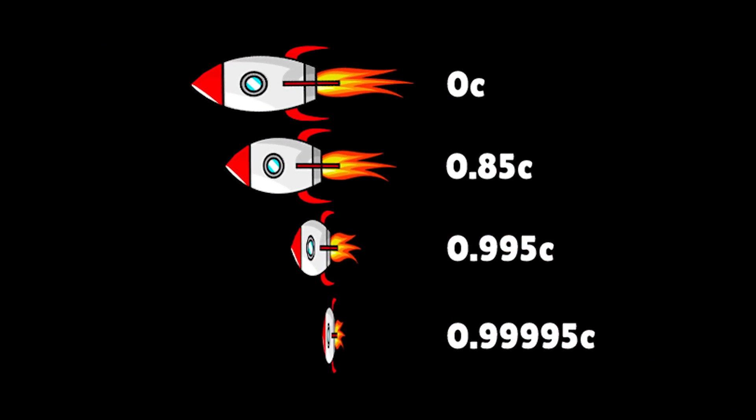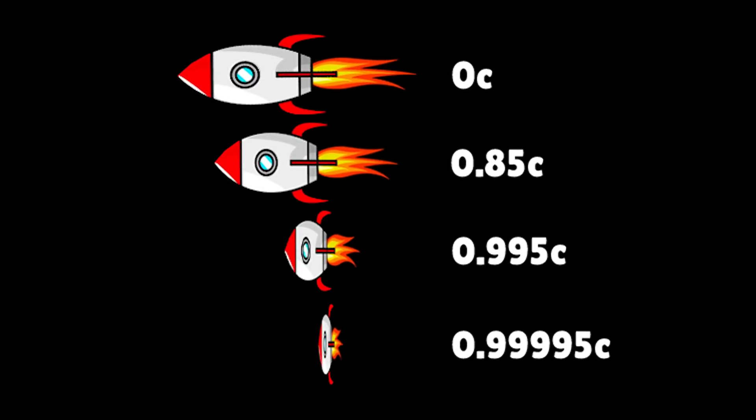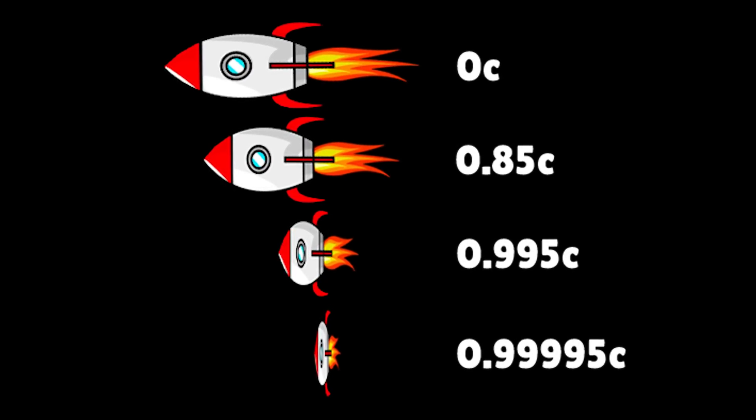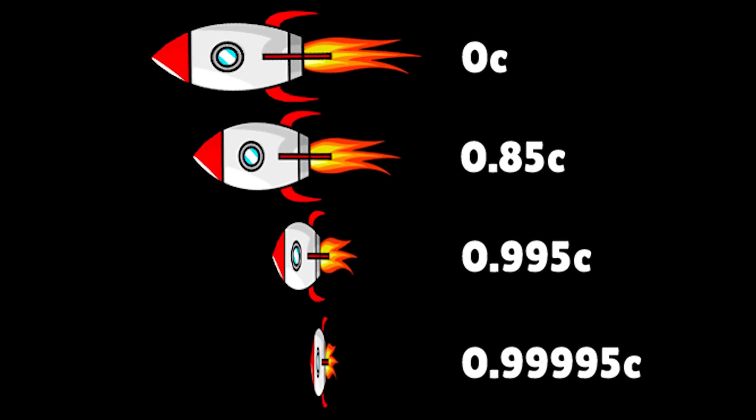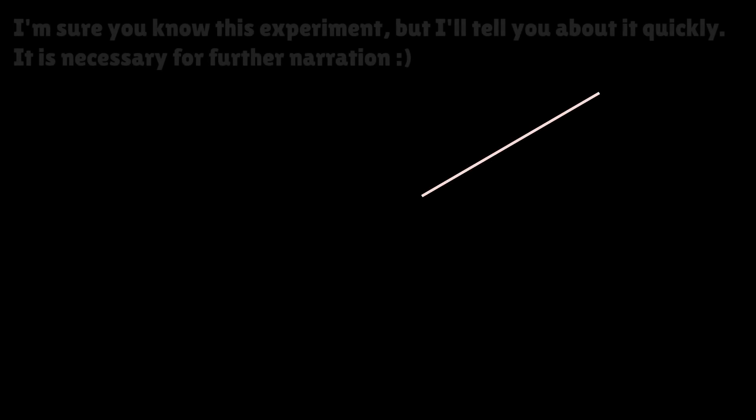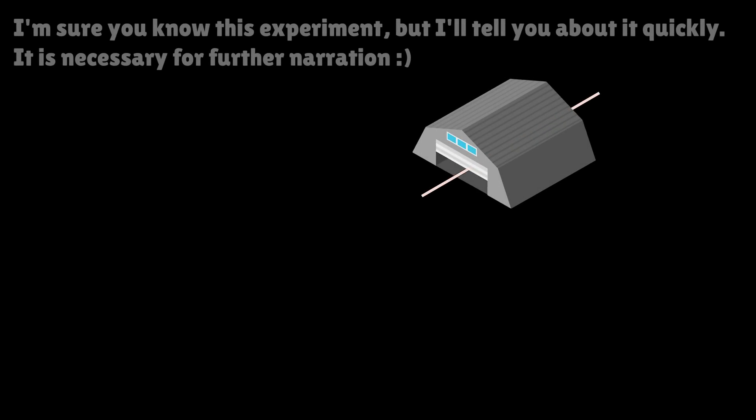The special theory of relativity tells us that for a stationary observer, the length of moving objects contracts in the direction of their movement. Imagine a 10 meter stick and a 5 meter hanger. Based on the principles of the special theory of relativity, if the stick moves fast enough at a speed close to the speed of light, the stick can fit inside the hanger entirely.